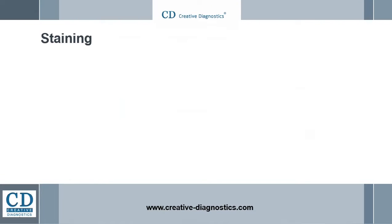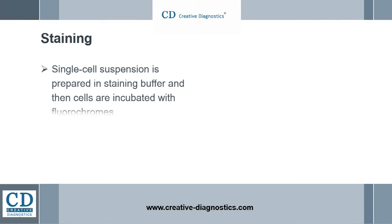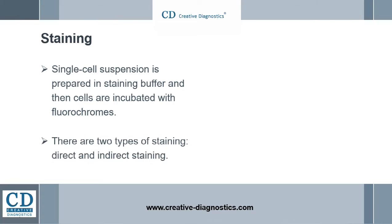A single cell suspension is prepared in staining buffer, and then cells are incubated with fluorochromes. There are two types of staining: direct and indirect staining. In direct staining, one primary antibody is labeled with a fluorophore, or one fluorescence dye directly detects the target. Direct staining is highly efficient with one staining step and without nonspecific binding from a secondary antibody.